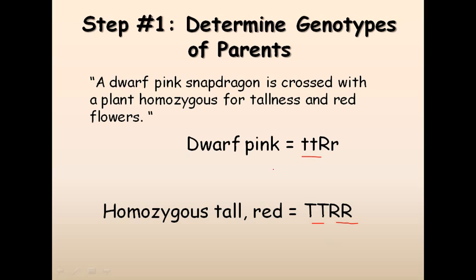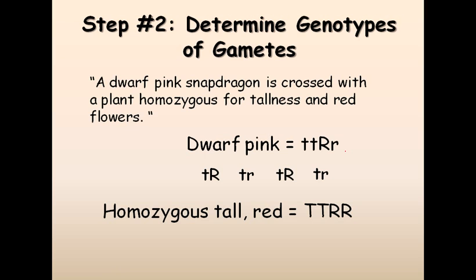Now, what are the possible gametes from each parent? From the dwarf pink plant (tt Rr), the possible gametes are tR and tr. From the homozygous tall red plant (TT RR), there is only one type of gamete possible: TR. All gametes from this parent will be capital T and capital R.